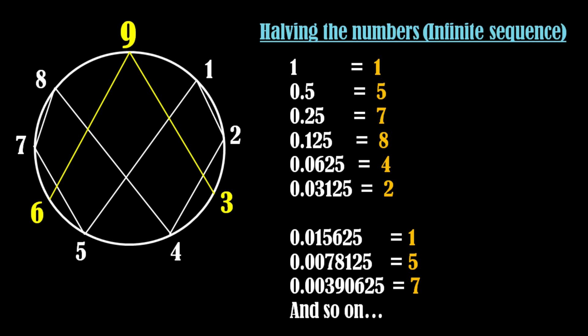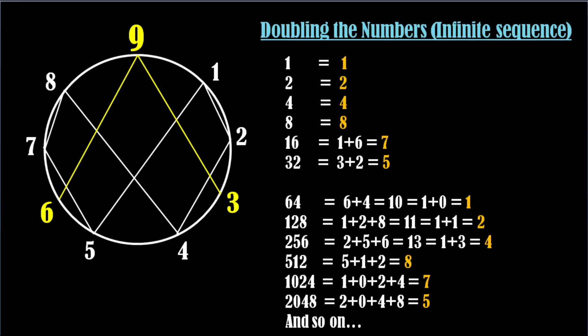It's surprising to observe that the same set of numbers repeats when we double or half the numbers. The sequence of 1, 2, 4, 8, 7 and 5 appears consistently. An interesting observation is that the numbers 3, 6 and 9 are missing every time from both sequences.